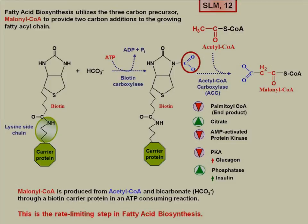How is fatty acid synthesis controlled? The rate-limiting step is the production of malonyl-CoA. The biotin carrier protein combines with bicarbonate, and using ATP we get this carboxylic group, or CO2 group. Then acetyl-CoA is combined with this CO2 group, and malonyl-CoA is formed. That's carried out by the enzyme acetyl-CoA carboxylase, or ACC. There are several things that either inhibit or activate ACC.